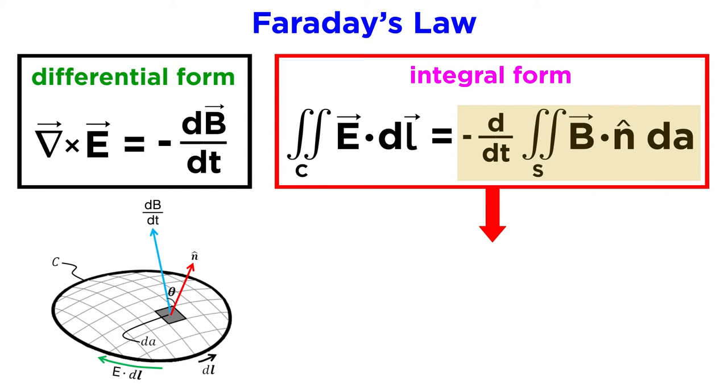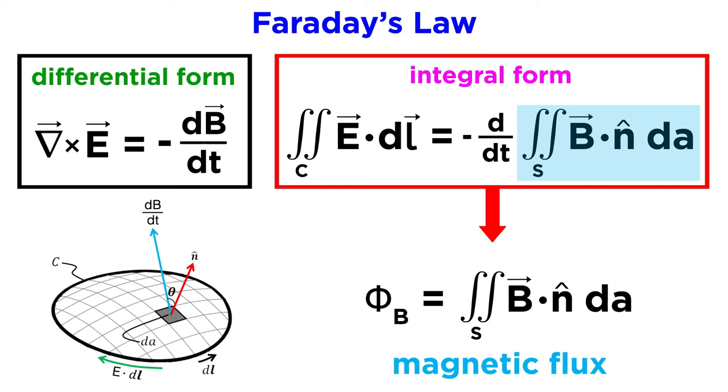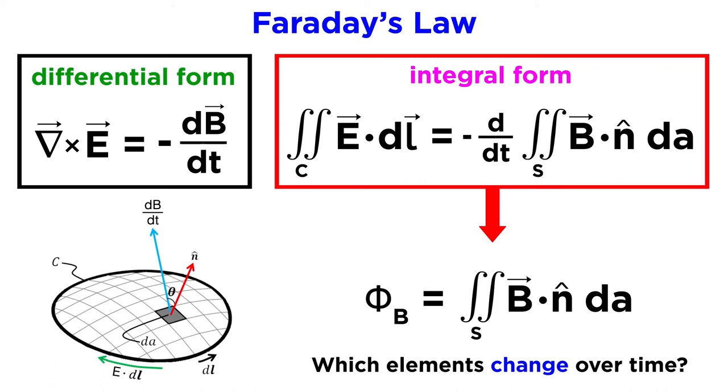The right-hand side of Faraday's law may seem intimidating at first. However, on closer examination, we can see that one term is simply the magnetic flux, represented by phi sub B, equal to this surface integral. When combined with this time derivative, it creates a more complex meaning than simply a changing magnetic field. Look closely at this flux equation for elements that might change with time.